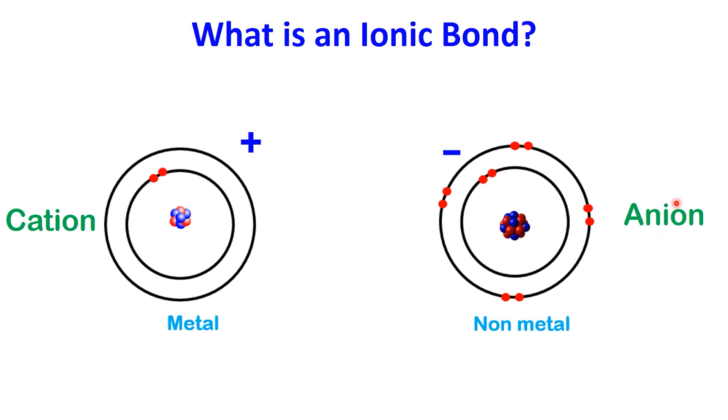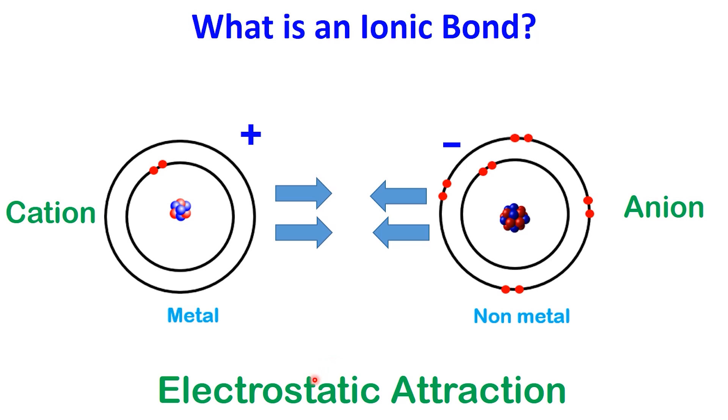Because these two ions have opposite charges, they attract each other strongly. This electrostatic force of attraction between oppositely charged ions is what we call the ionic bond.